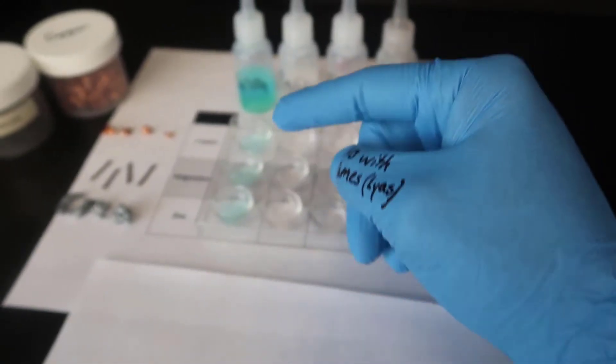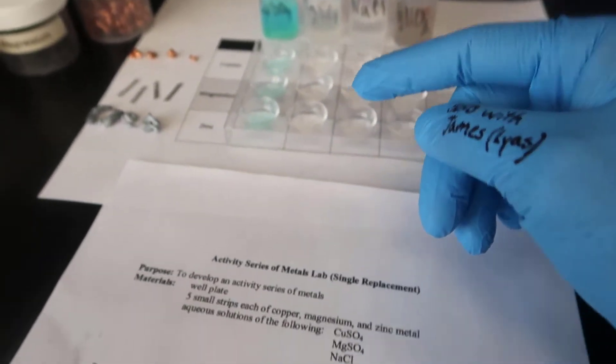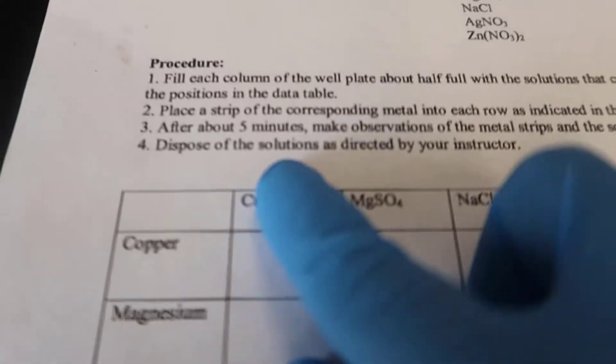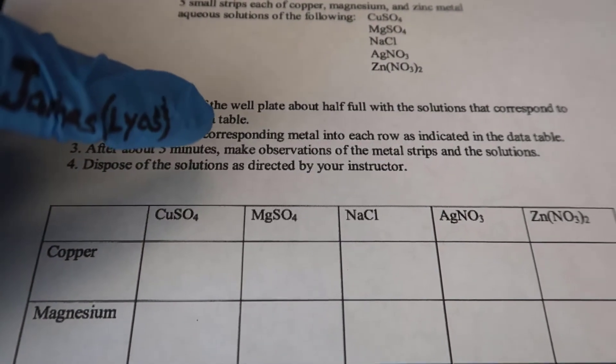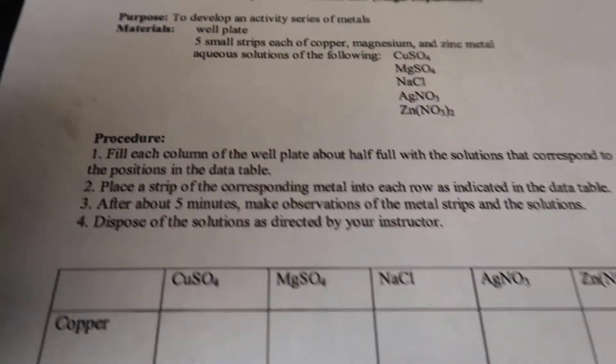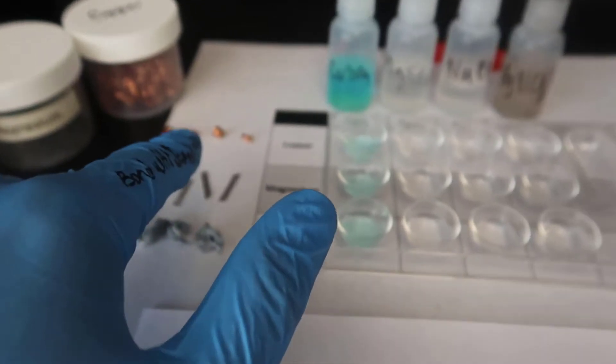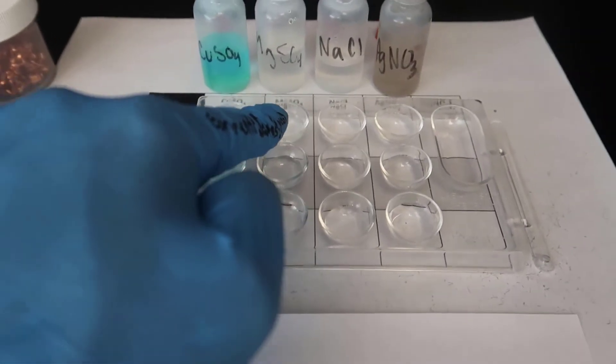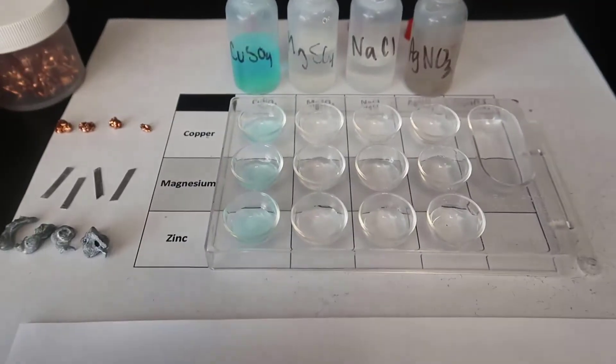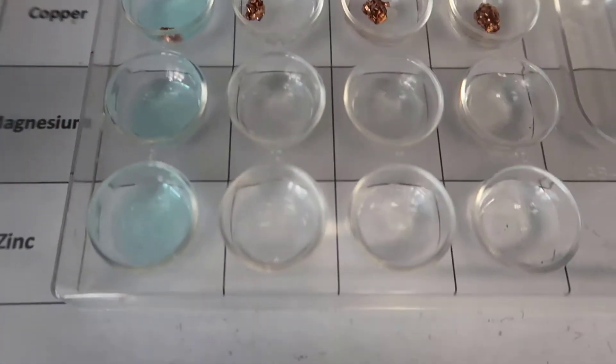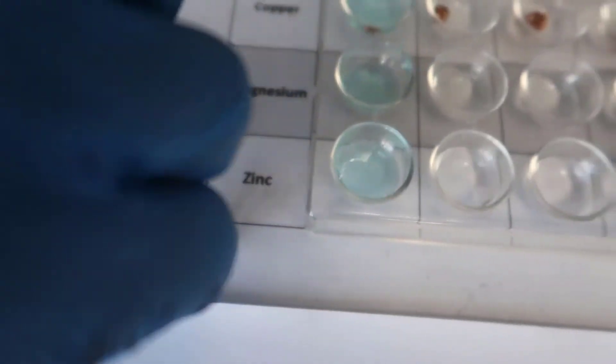So I placed 15 drops of each solution into the corresponding well plates. Now it says, place a strip of the corresponding metal into each row as indicated in the data table. So again, I'm going to take each metal, and I'm going to place a piece of each of that metal across each row. That was copper. I take the magnesium, I'm going to bend it.